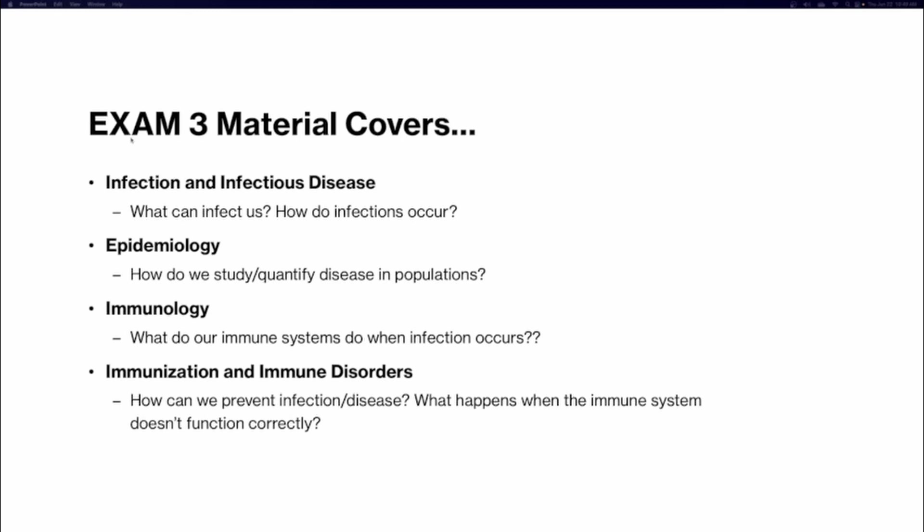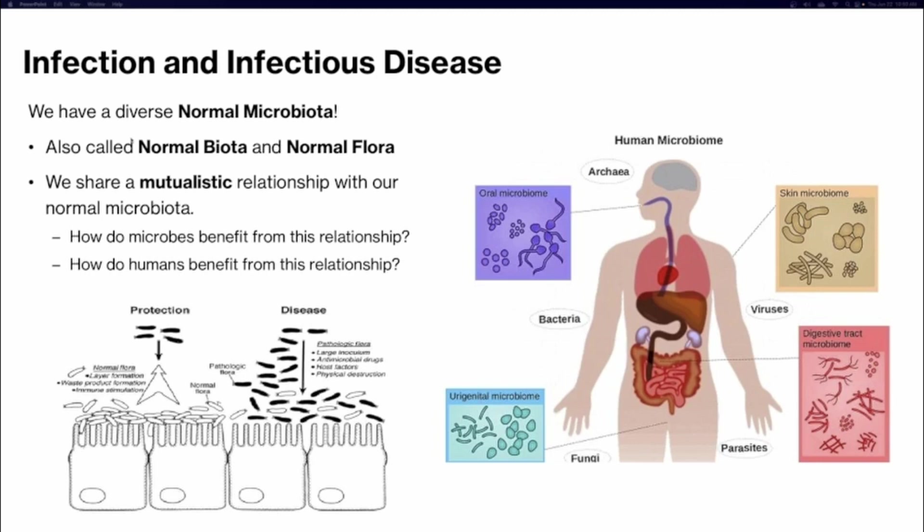Our exam 3 material covers infection and infectious diseases — what can infect us and how do these infections occur? Epidemiology was a very short lecture and is only about 4 or 5 questions on the exam — that's how we study and quantify diseases in a population. Immunology covers what our immune systems do when infections occur, and immunization and immune disorders cover how we can prevent infection and disease, what happens when the immune system doesn't function correctly, and what a vaccination is. We'll go over each of these topics over the next several slides.